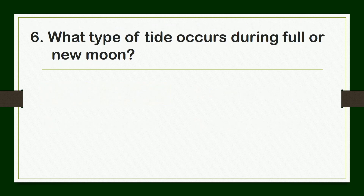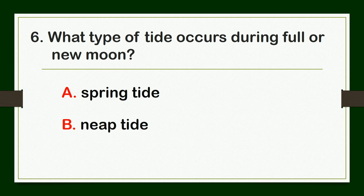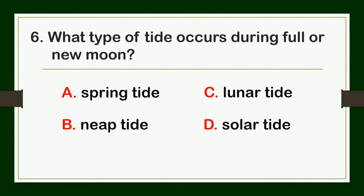What type of tide occurs during full or new moon? A. Spring tide, B. nip tide, C. lunar tide, or D. solar tide.